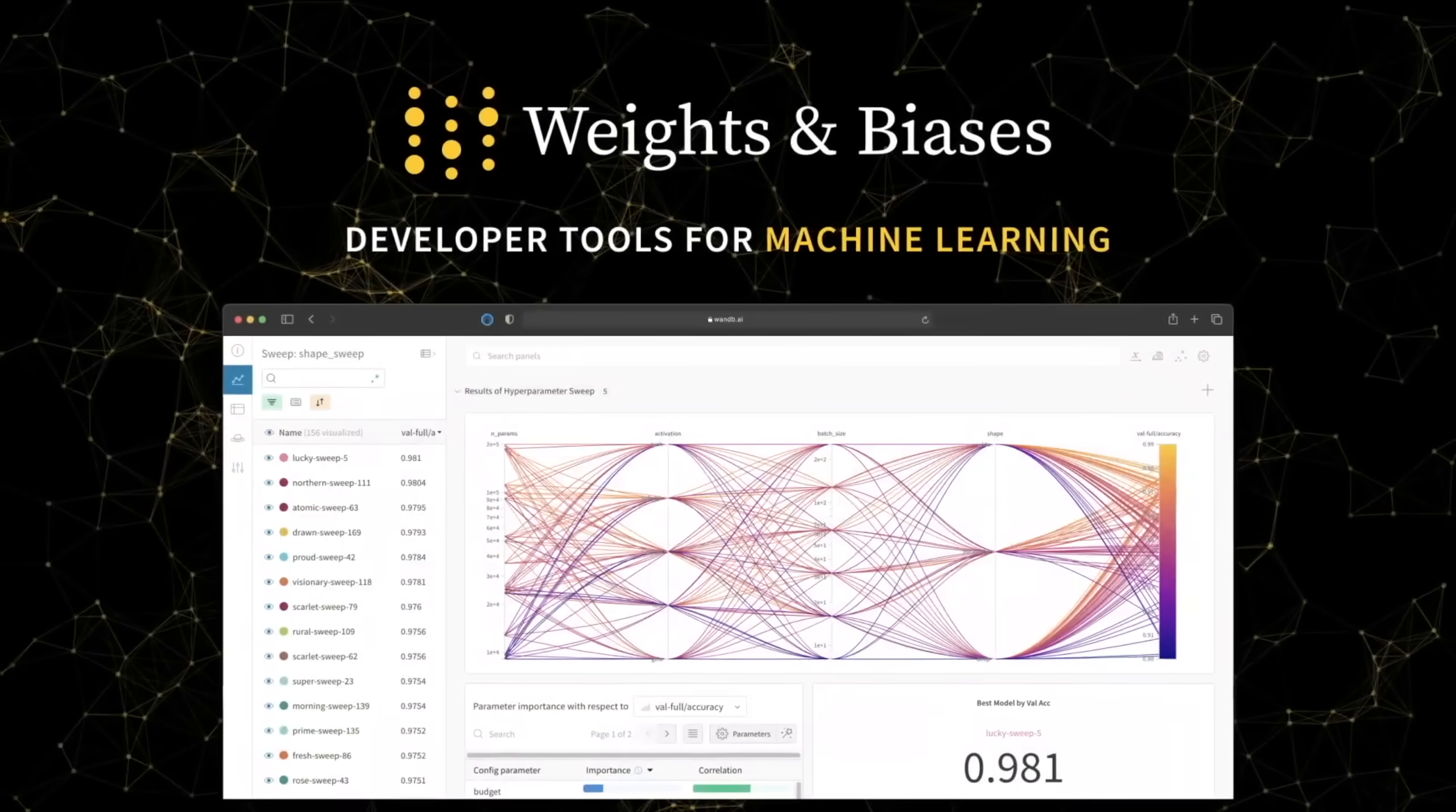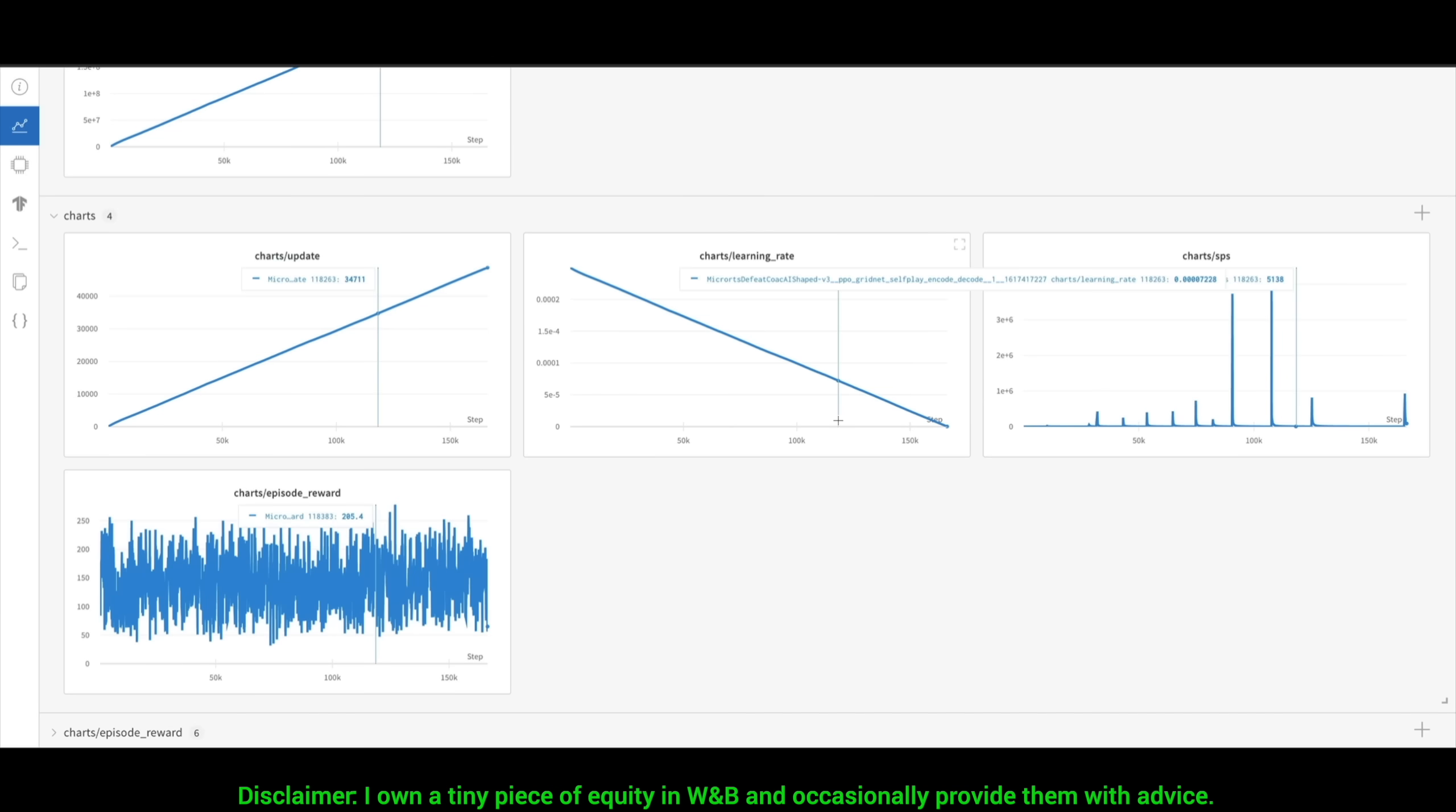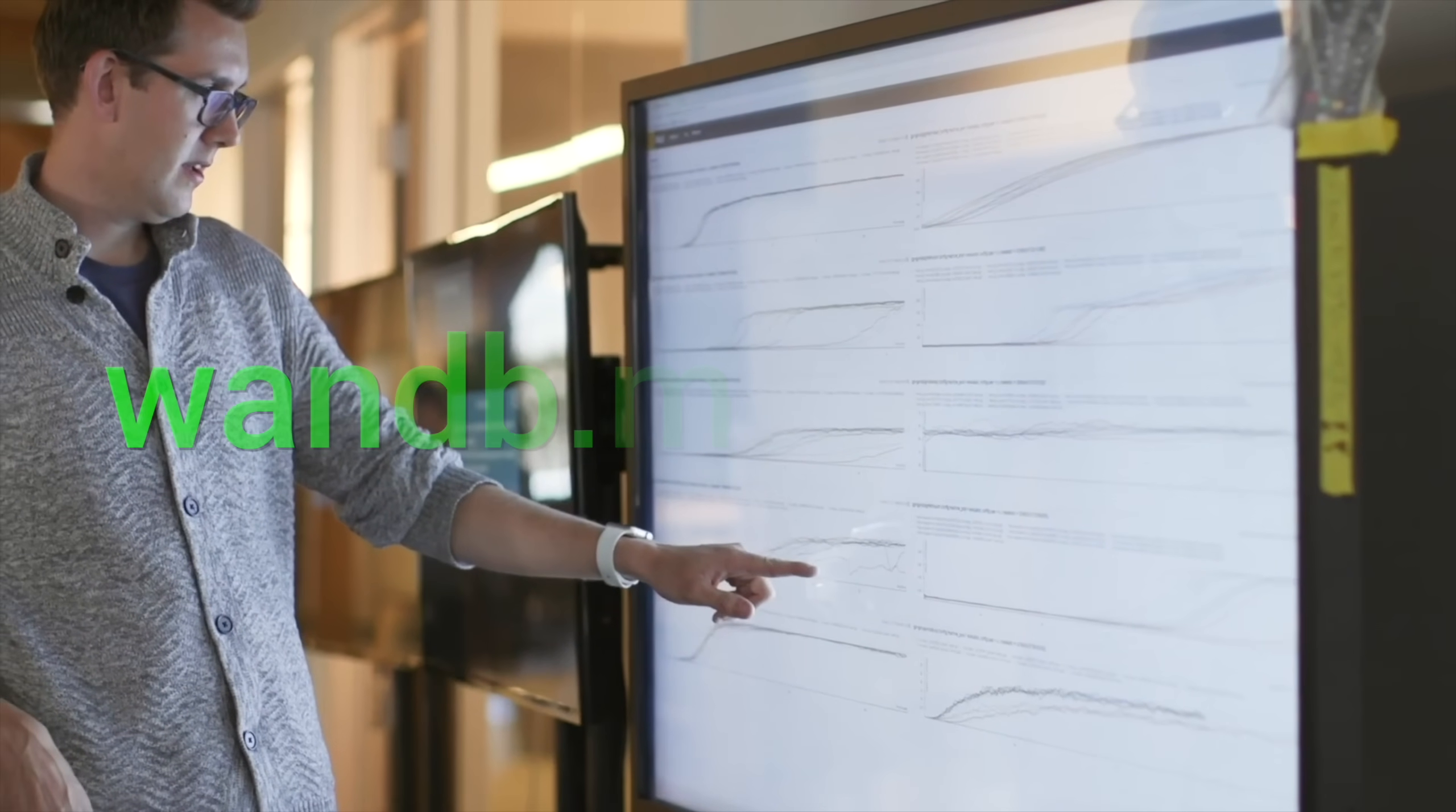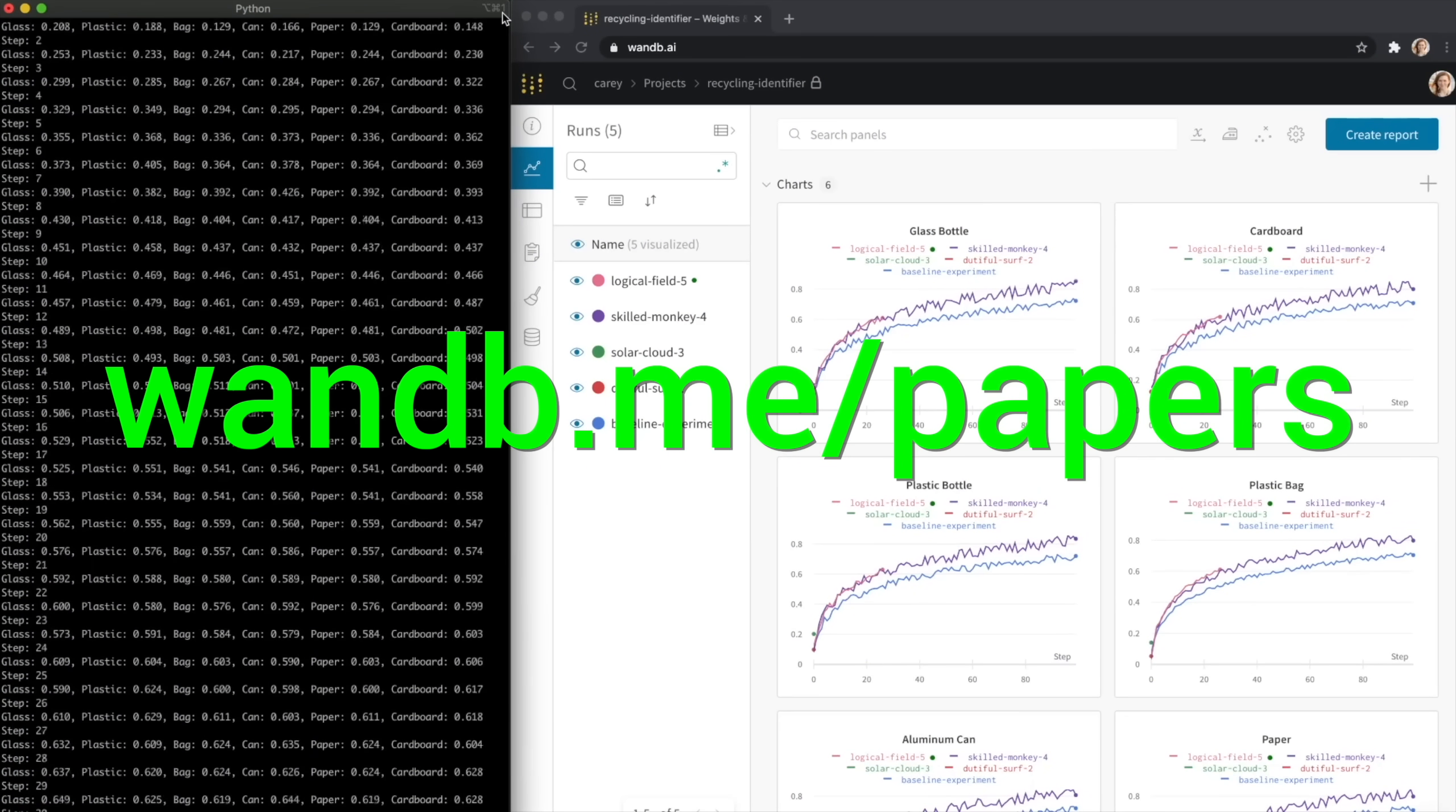Experiment tracking, model evaluation, and production monitoring for your deep learning projects and LLM apps. This is what Weights and Biases does, and it is the best! Everyone is using it! Try it out now at wnb.me slash papers or click the link in the description below!